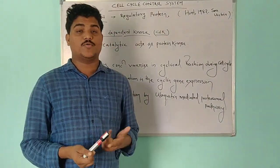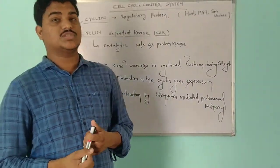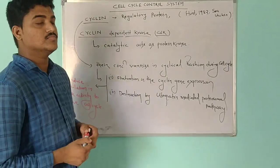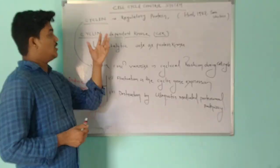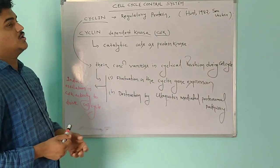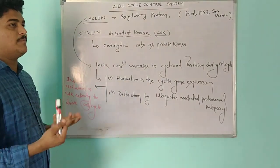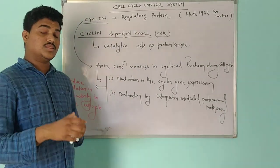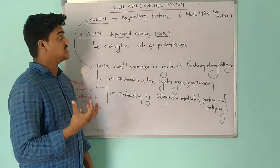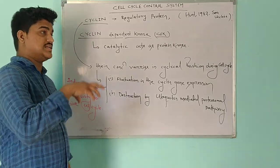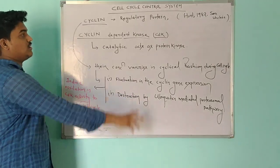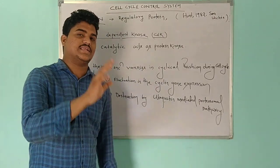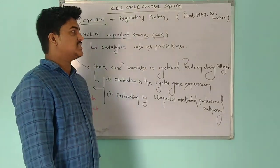Good morning students. Today we are going to discuss about the cell cycle control system in this video. The protein complexes involved in controlling the cell cycle are classified into two categories: one is cyclin, and another is cyclin-dependent kinase.